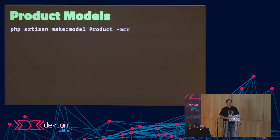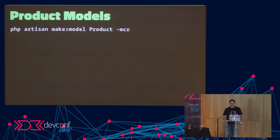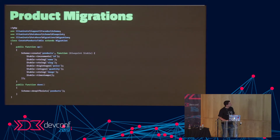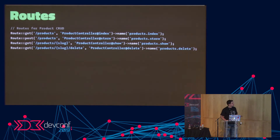To design the product microservice, we use Laravel's Artisan command to make our product model with the MCR flag, which creates models, controllers, and routes. The migration is very simple — an ID primary key, name, slug, price, quantity, and images. Our routes will have products index returning all products, product store for saving, product show for retrieving a single product, and products delete for removing a product.